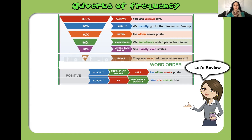Another example uses the verb 'to be'. The order is: subject, verb to be, then frequency adverb. For example: 'You are always late.' Here, 'you' is the subject, 'are' is the verb to be, and 'always' is our frequency adverb.